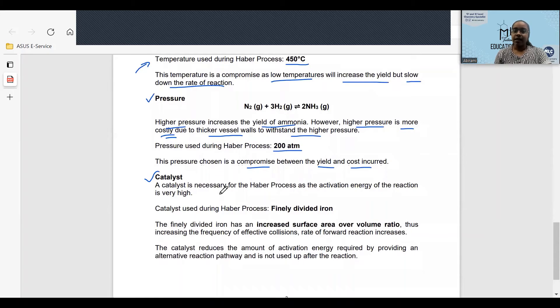Lastly, catalyst. A catalyst is necessary for the Haber process as the activation energy for the reaction is very high. The catalyst used during the Haber process is finely divided iron. Take note it is finely divided.